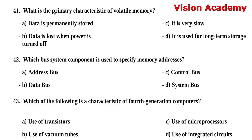Question 41: What is the primary characteristic of volatile memory? Option A: data is permanently stored. Option B: data is lost when power is turned off. Option C: it's very slow. Option D: it is used for long-term storage. The right answer is Option B, data is lost when power is turned off.